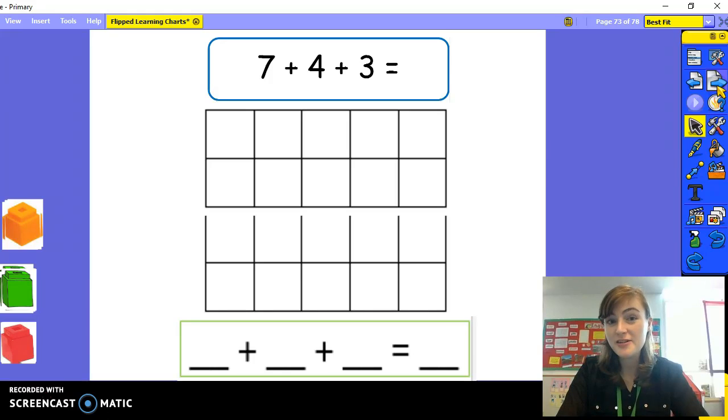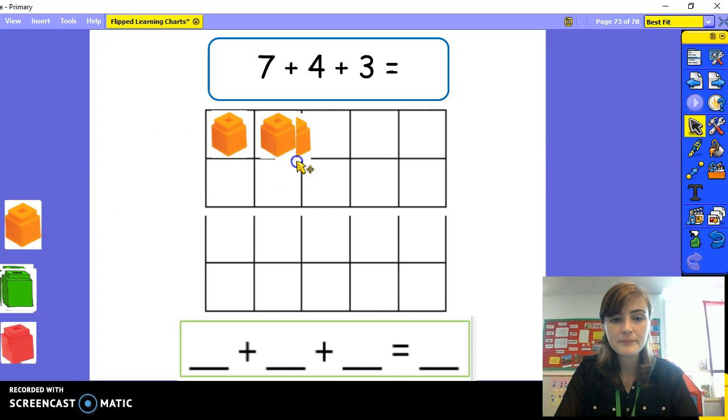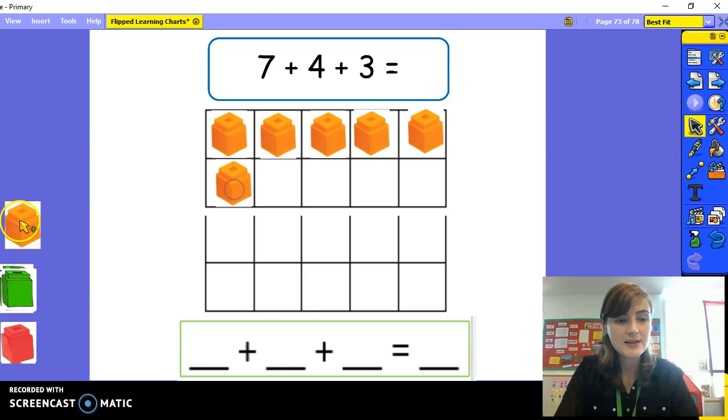Now let's try a harder one with bigger numbers. This number sentence says seven plus four plus three equals. Let's count it out. One, two, three, four, five, six, seven.